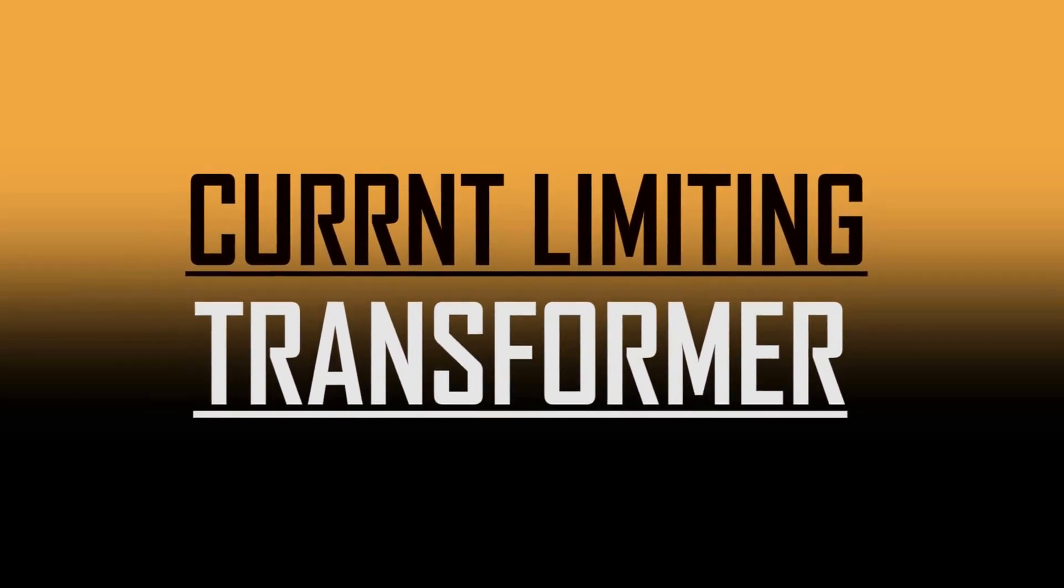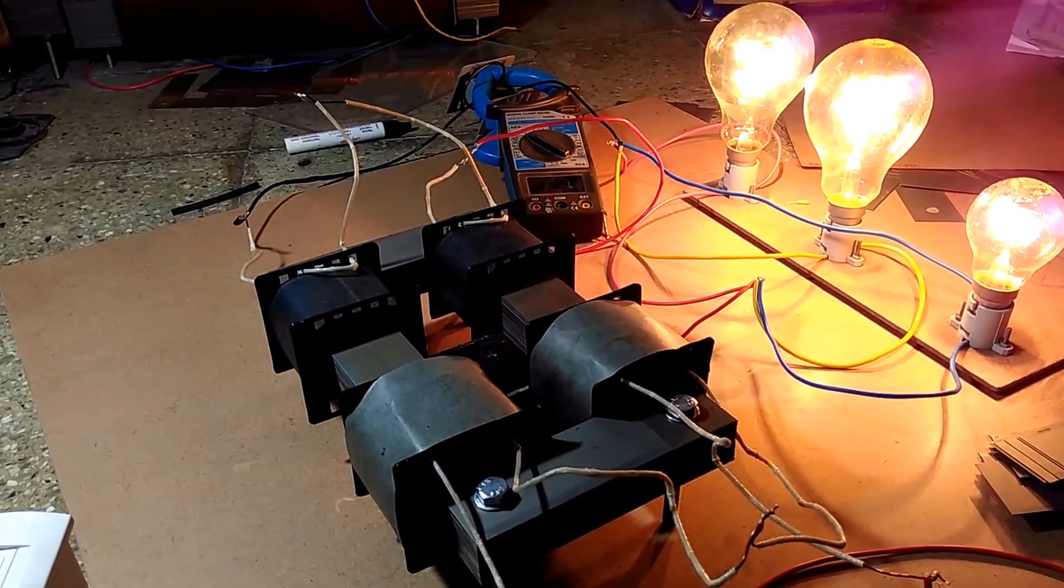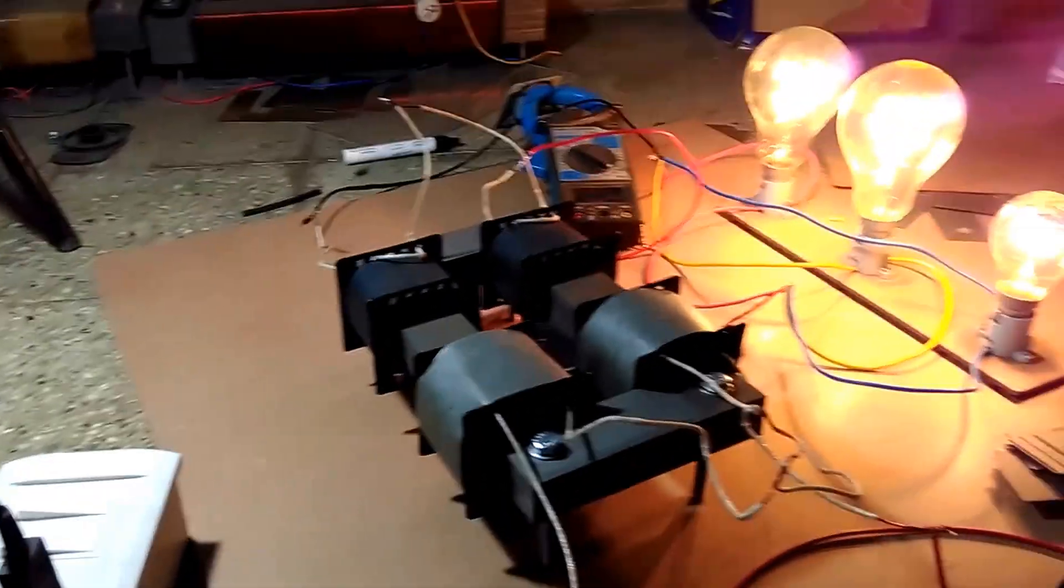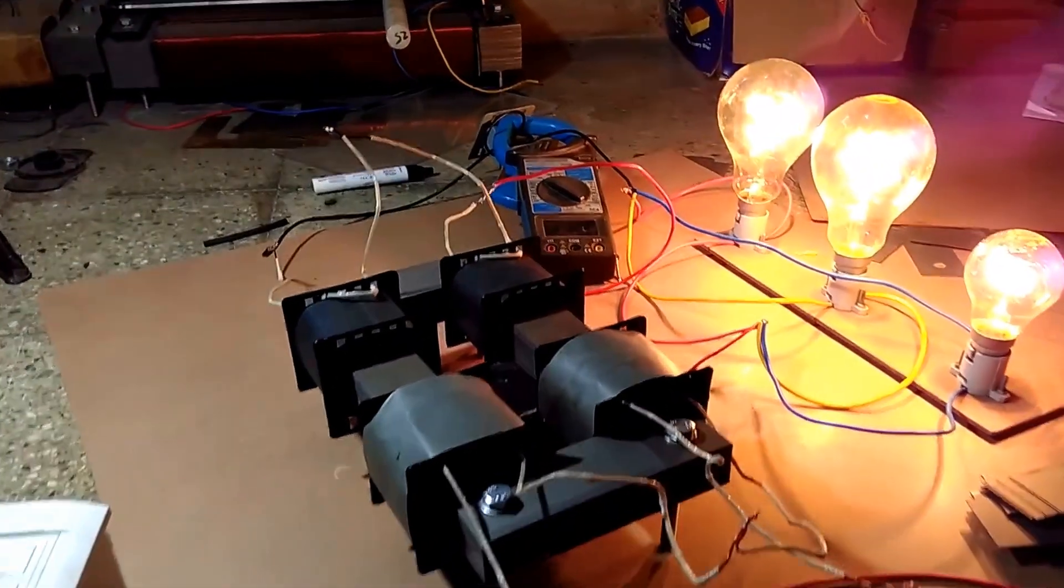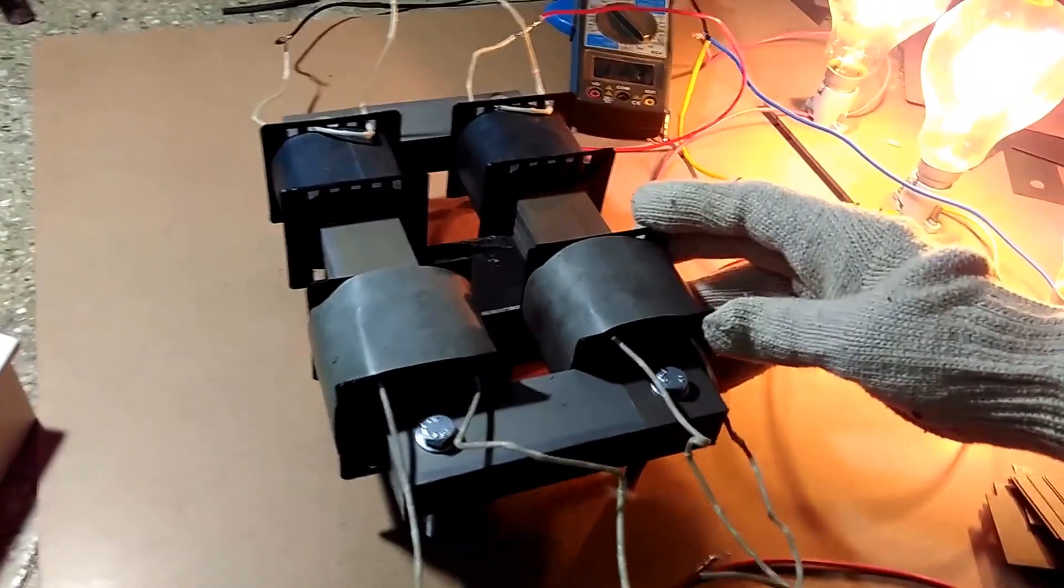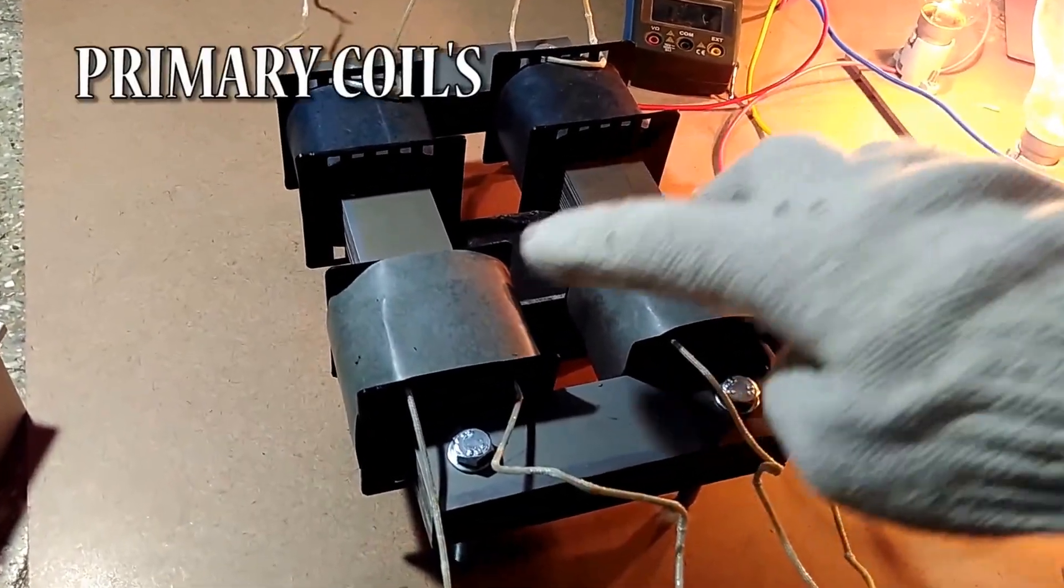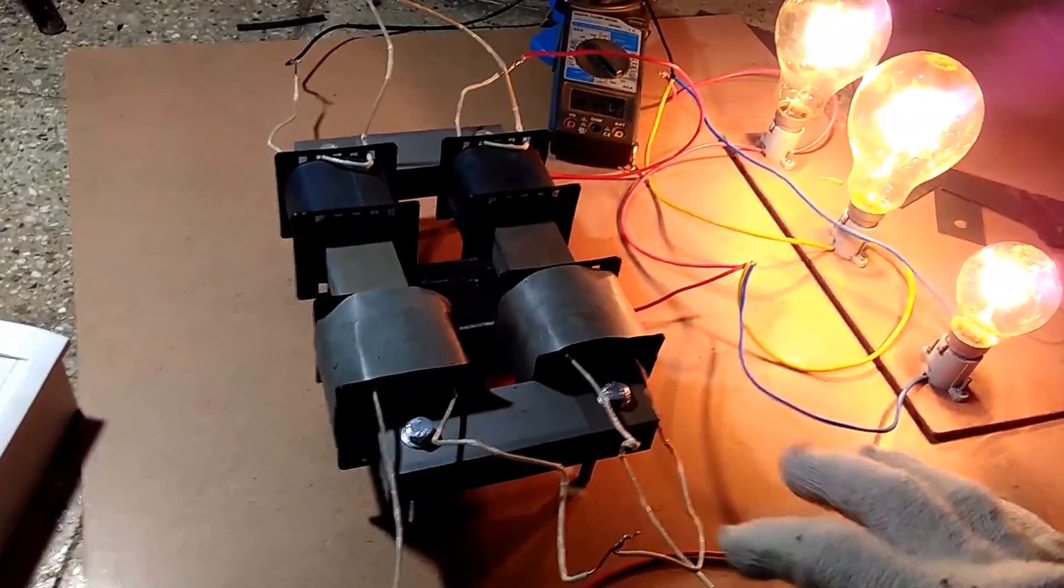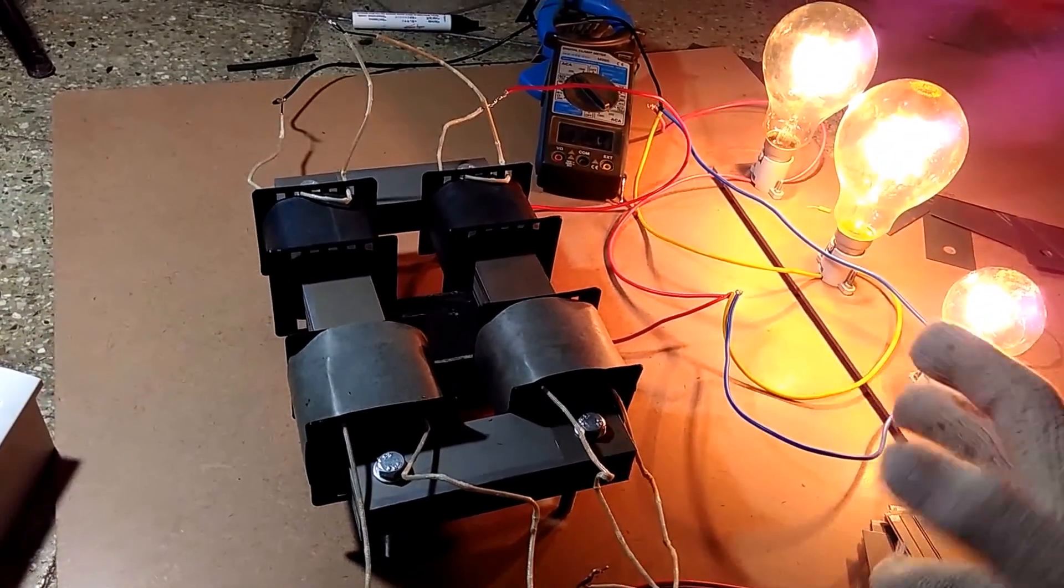This is the most innovative project. Here we use a current limiting transformer to demonstrate current limiting. Let's see its construction. Here is a transformer which has two primary coils and two secondary coils. The transformer is connected and designed in core type fashion.